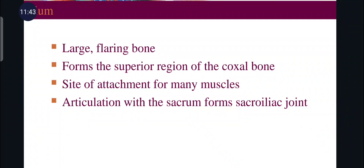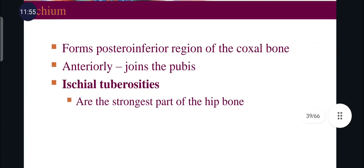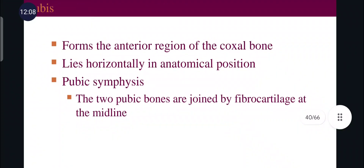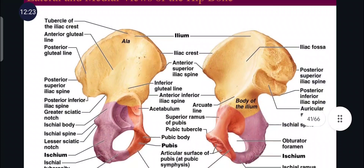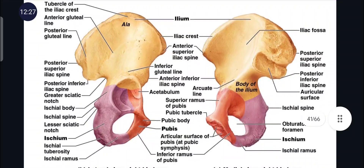The ilium is a large flaring bone forming the superior region of the coxal bones, with sites for muscle attachment, and it articulates with the sacrum to form the sacroiliac joint. The ischium forms the posterior-inferior region of the coxal bones and anteriorly joins the pubis. The ischial tuberosities are the strongest parts of the hip bone. The pubis forms the anterior region of the coxal bones and lies horizontally. The two pubic bones are joined by fibrocartilage at the midline, forming the pubic symphysis.